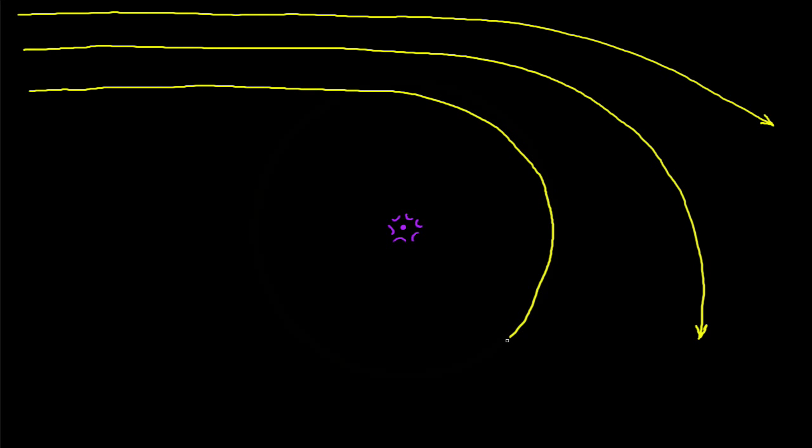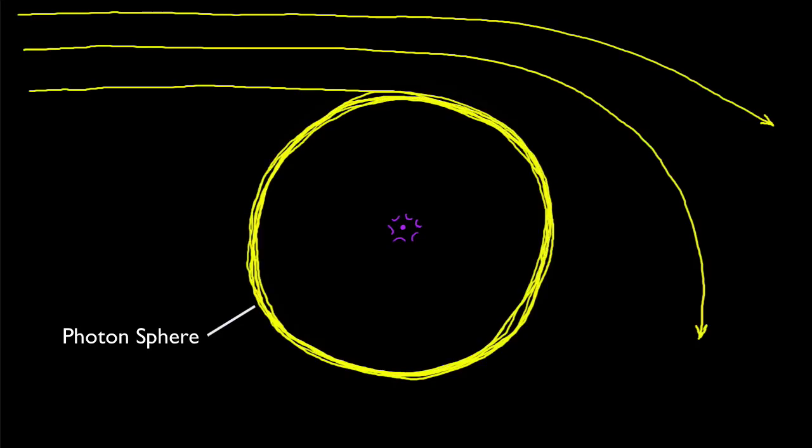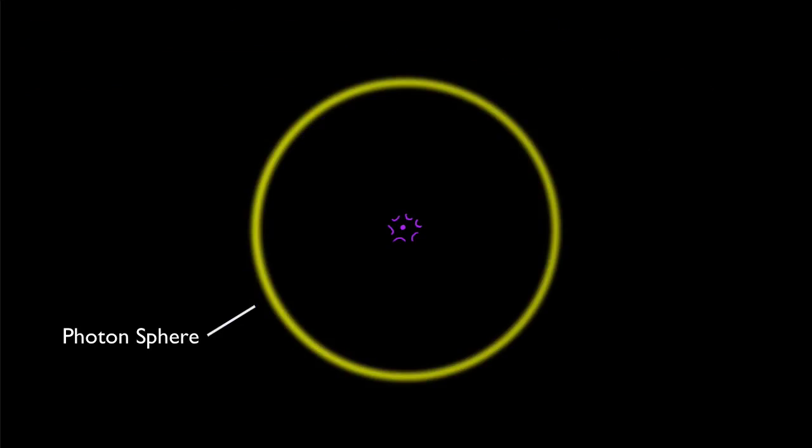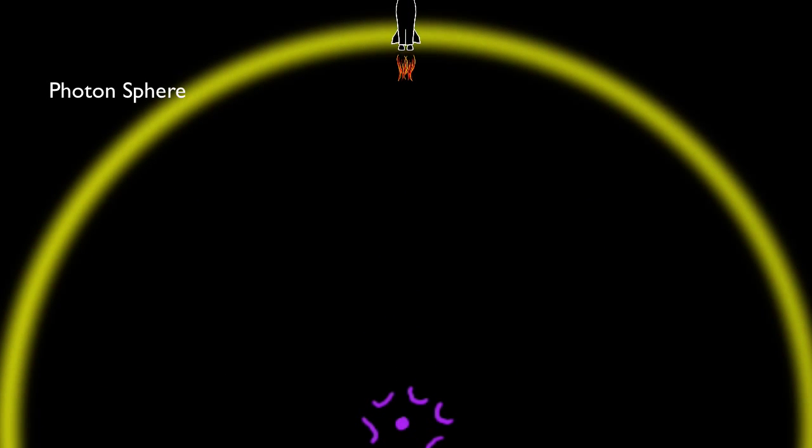Light passing by a black hole is easily deflected. If it comes in at a certain angle, the light can actually enter into an orbit around the black hole. We call this the photon sphere. A spaceship with powerful enough engines could enter within the photon sphere, do some fun experiments, and then come back out.